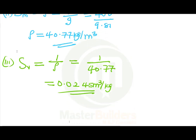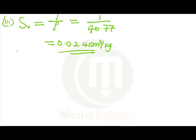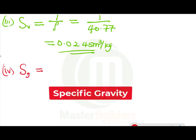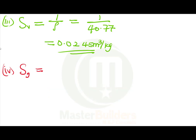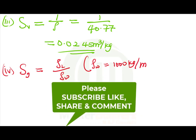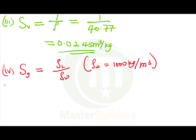Number four: specific gravity, which is the same thing as relative density. Specific gravity is the ratio of the density of the liquid to the standard density of water. So we use: density of liquid over density of water. By standard, the density of water is 1,000 kg/m³.